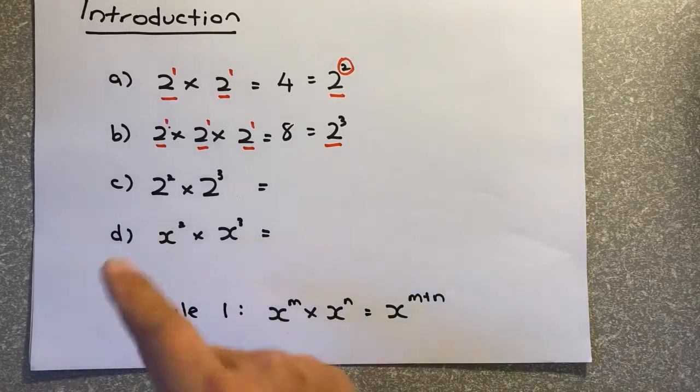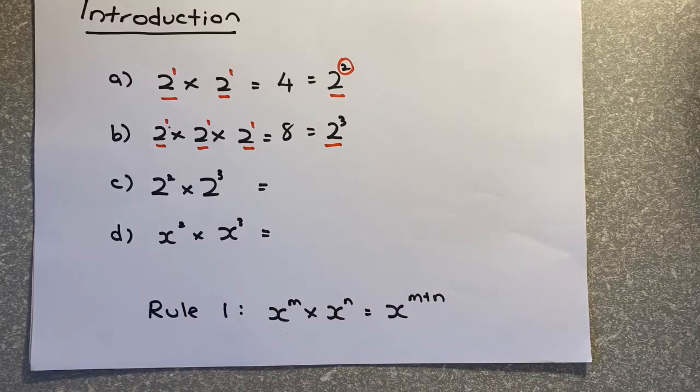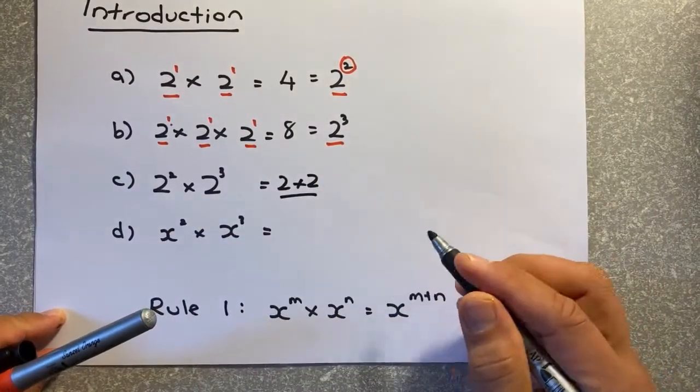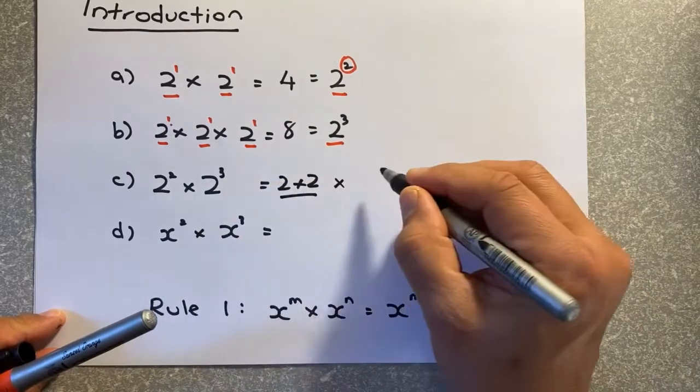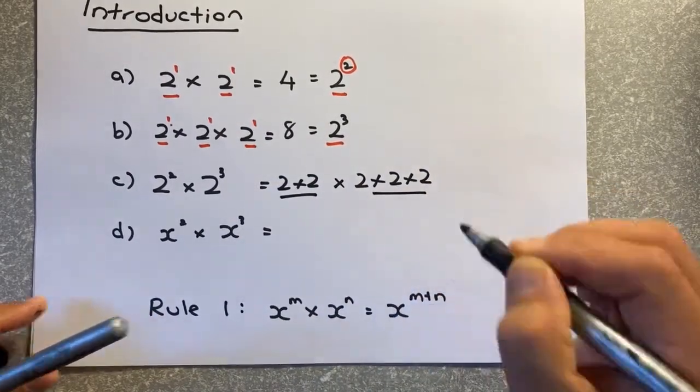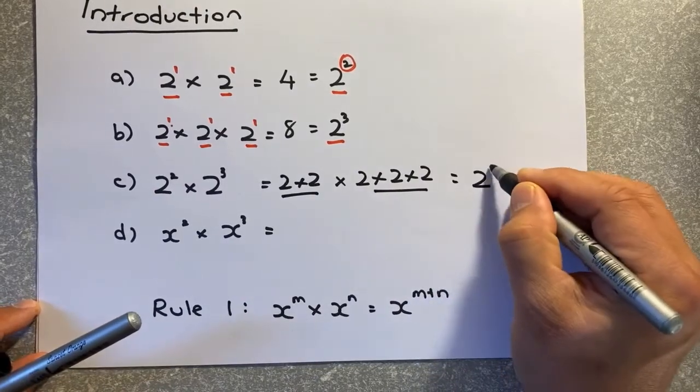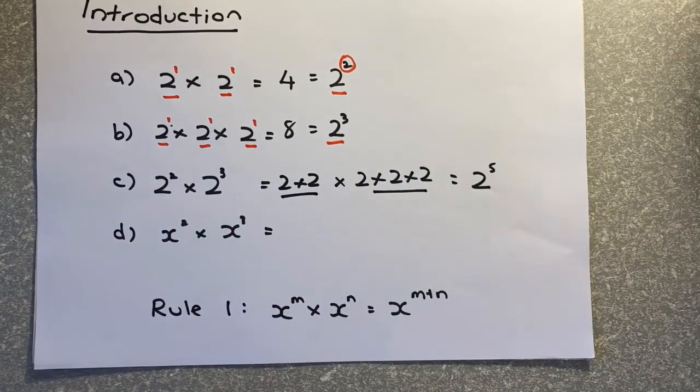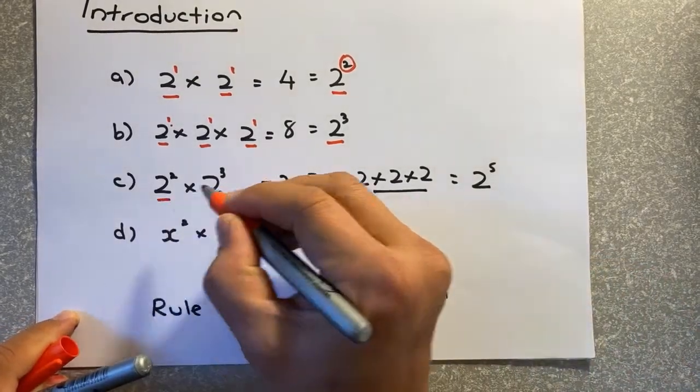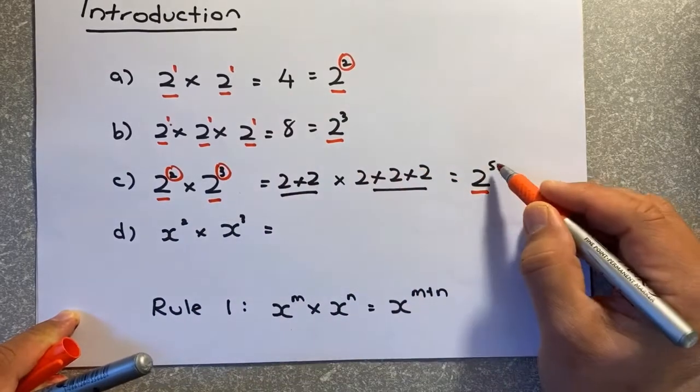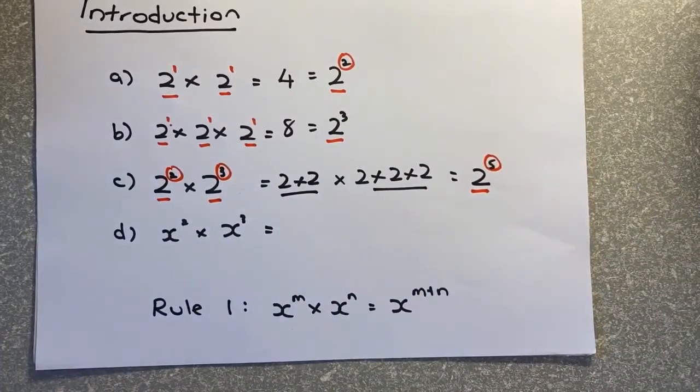So similarly, if you have 2 squared times 2 cubed, it actually means 2 times 2, that is for the first 2 squared, and the second 2 power 3 is 2 times 2 times 2, so that's how you get 2 to the power of 5. In simplicity's sake, the base is 2 and 2 the same, and you just add 2 and 3, that will give you 5.